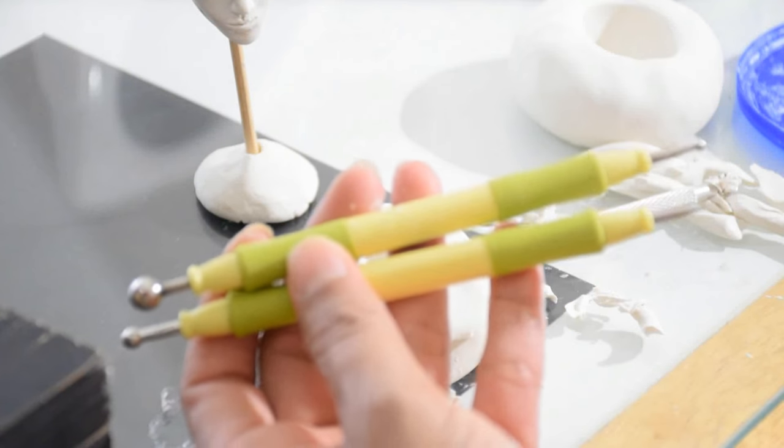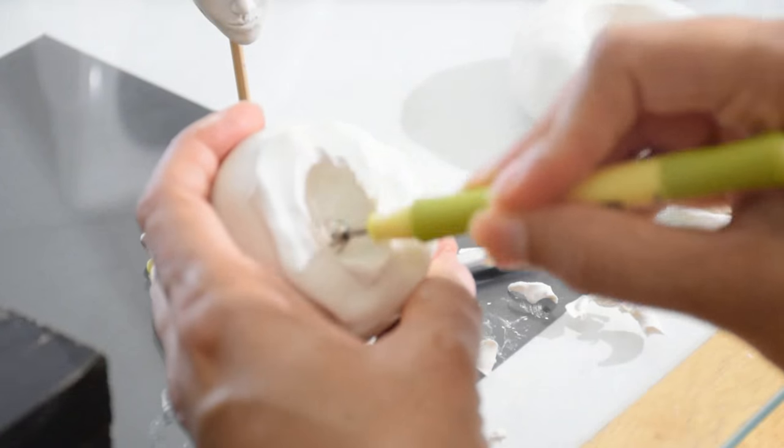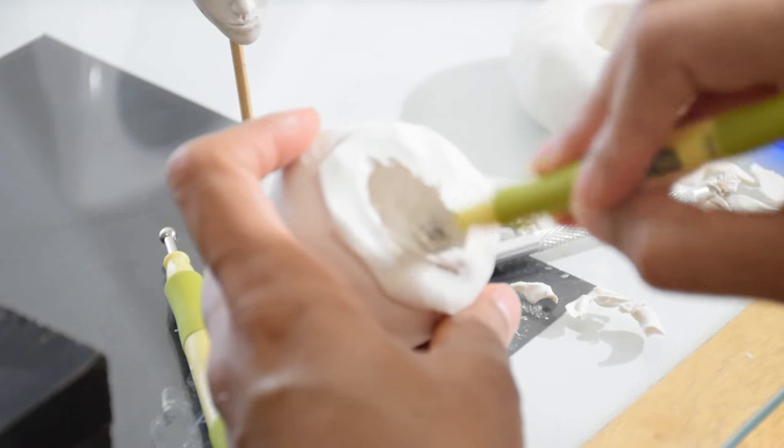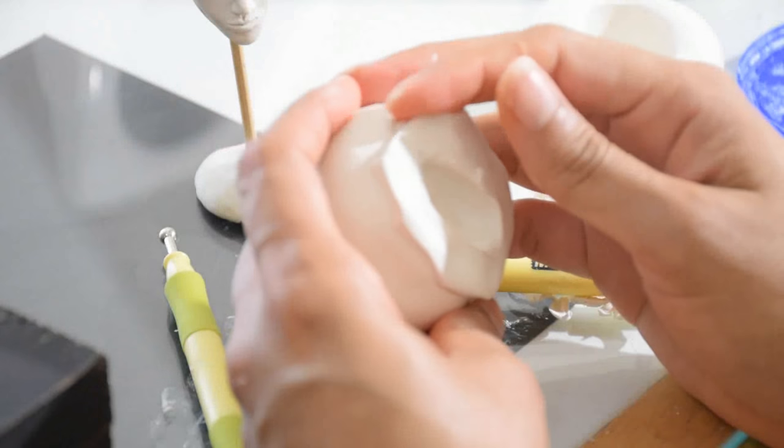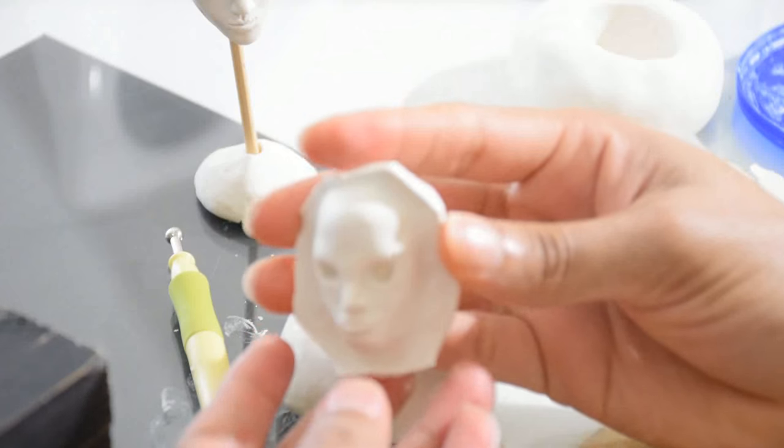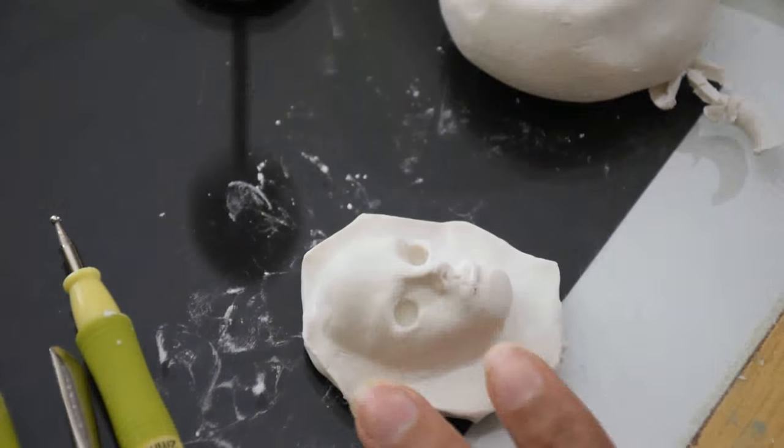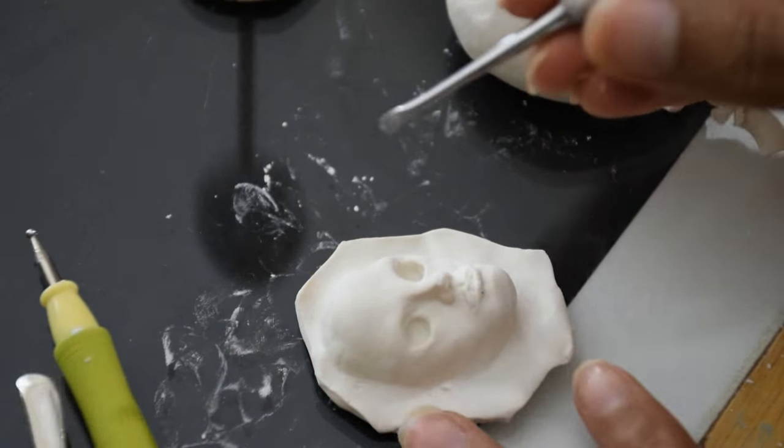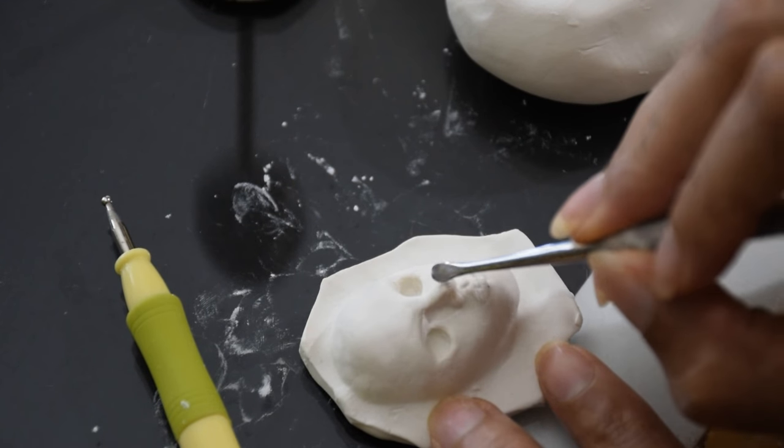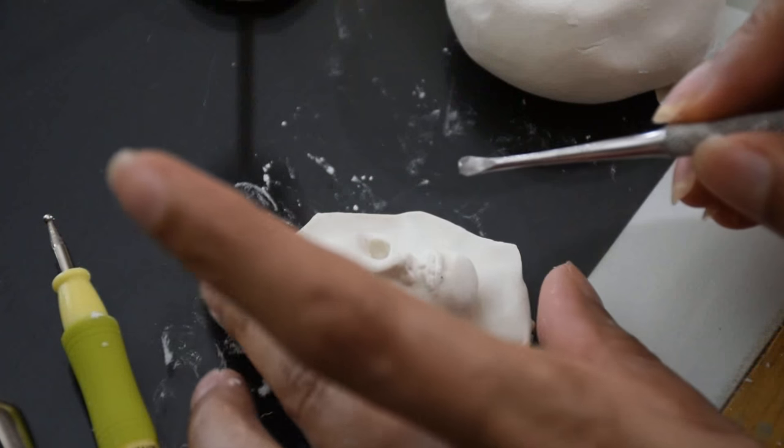Use the ball tool to smooth the inside and then gently remove the head from the mold. Now use your small smoothing tool to clean up the face, reshape any little defects if necessary, and change facial expression as you want.